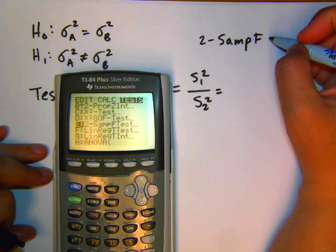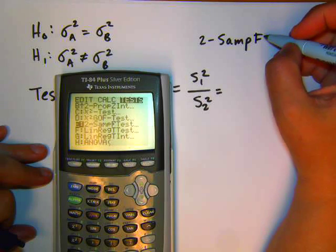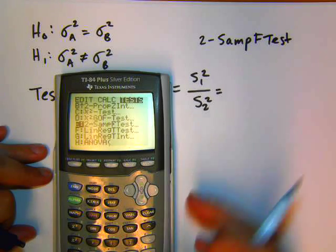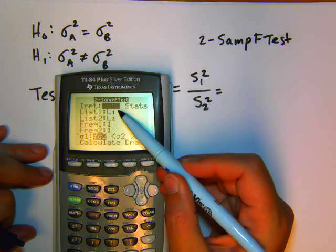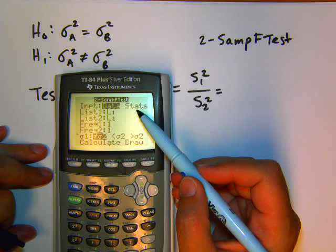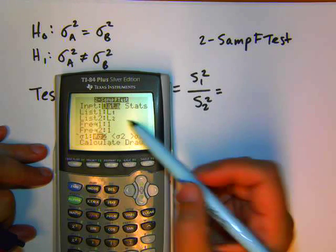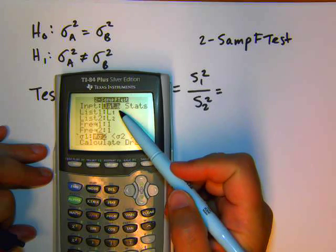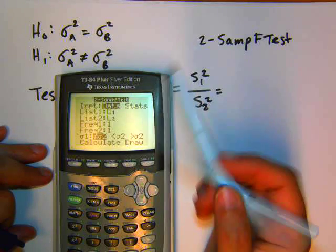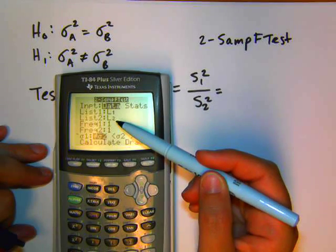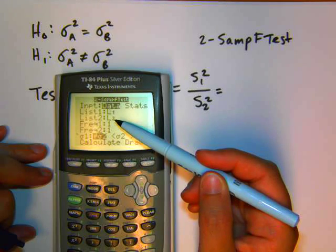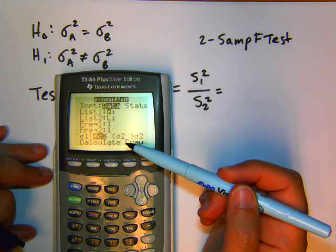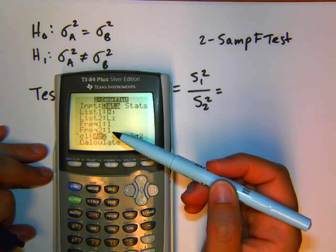On a TI-89, this would be under your F6 shortcut key in your stat. And it asks for either data or stats. So stats would be if you already had the standard deviation given to us. Data, we have raw data in our list. So make sure that data is highlighted. Make sure that you have the list set up correctly for list 1 and list 2. If you're in a TI-89, you actually have to have LIST1, LIST2 for your two list options. Keep the frequency as a 1.